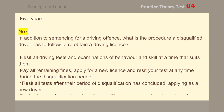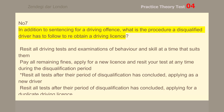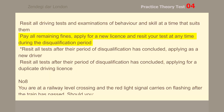Number 7. In addition to sentencing for a driving offense, what is the procedure a disqualified driver has to follow to re-obtain a driving license? Resit all tests after their period of disqualification has concluded, applying as a new driver.